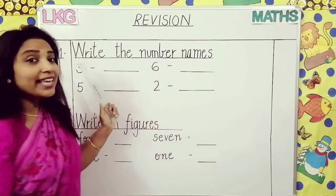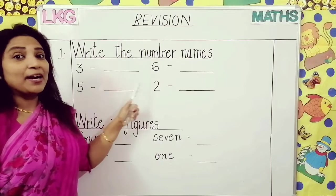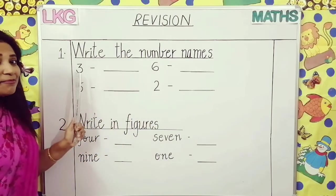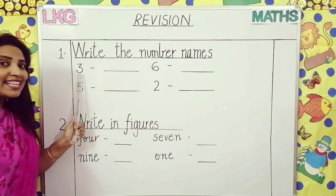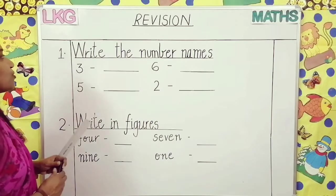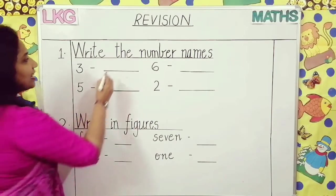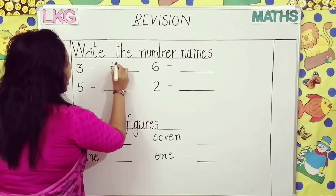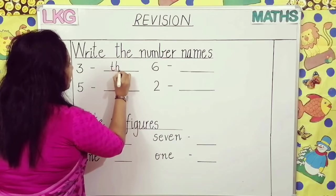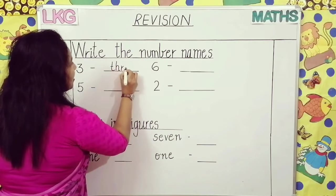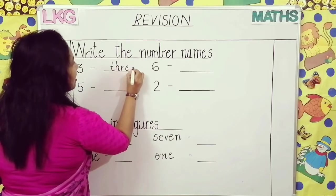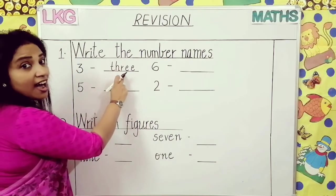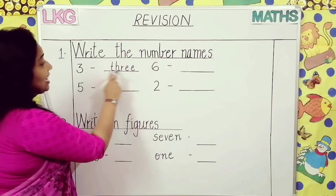Our first topic is: write the number names. Which one is the first number? Which number is this? Three. So what is the number name of three? T-H-R-E-E. Three.